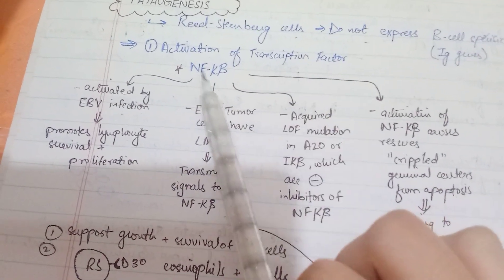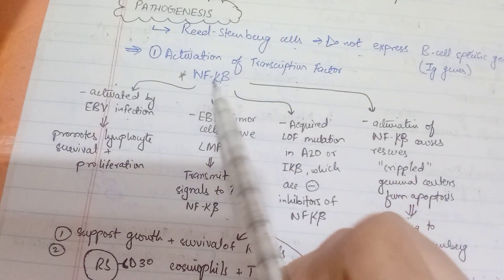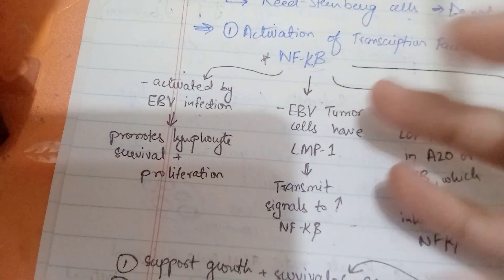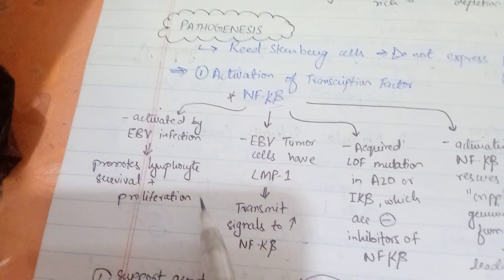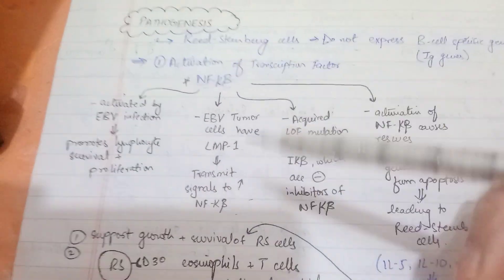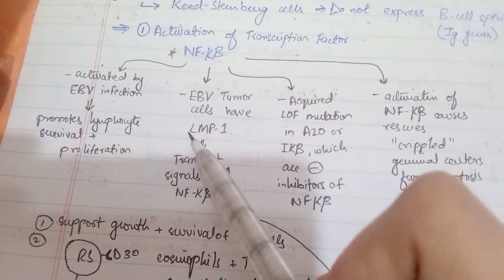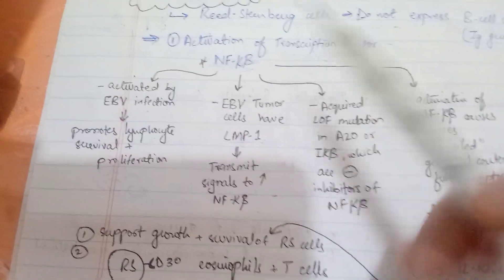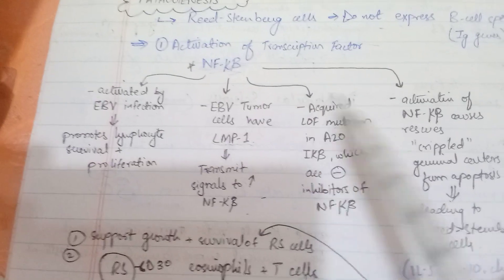Number one in pathogenesis is activation of transcription factor NF-κB, which is really important. The first mechanism is Epstein-Barr virus infection, which promotes lymphocyte survival and proliferation. The second mechanism: EBV infects cells, turning them into tumor cells, and within tumor cells a protein called LMP1 transmits signals to upregulate NF-κB. So the virus itself activates NF-κB, and then the LMP1 protein in tumor cells also increases NF-κB.